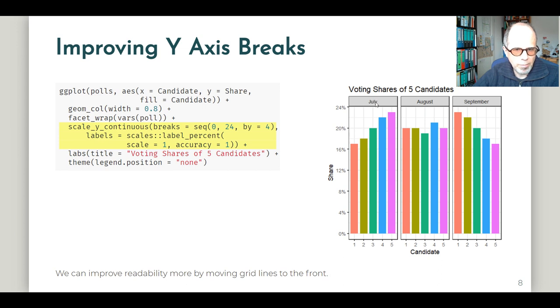Starting out on the left in the panel for July, in the middle candidate number three, it's easy to read exactly 20%. We move to the left to candidate number two. And we see it's exactly in the middle between 16 and 20%. So it has to be 18%. And moving to the left again to candidate one, we can see it's exactly in the middle between 16 and 18%. So it's obviously 17%. So now we can read all the percentages exactly. So I think readability is improved.